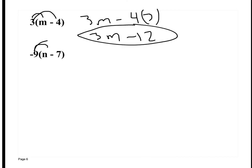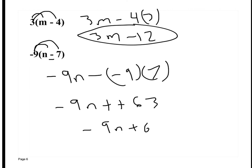This is the exact same thing. I distribute negative 9 out. So negative 9 times n is negative 9n. I keep the sign and then do negative 9 times 7, which is negative 63. So we have minus negative 63. We have two negatives side by side, so we make them positive. My answer is negative 9n plus 63.